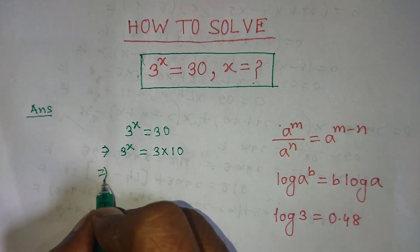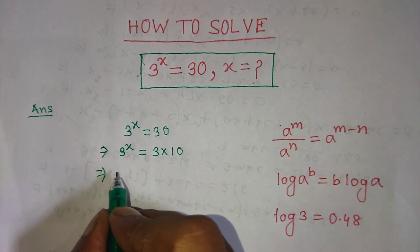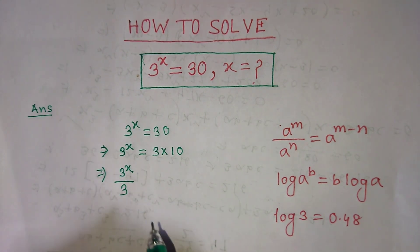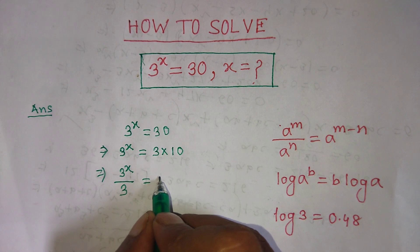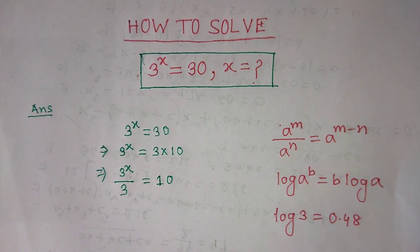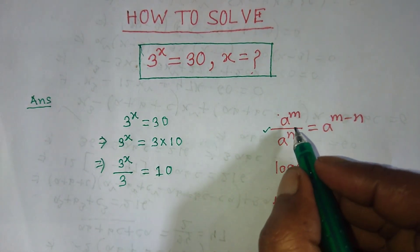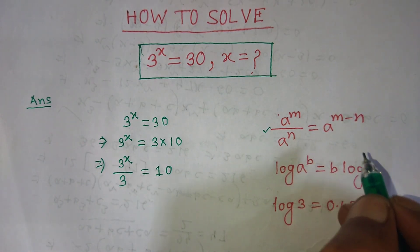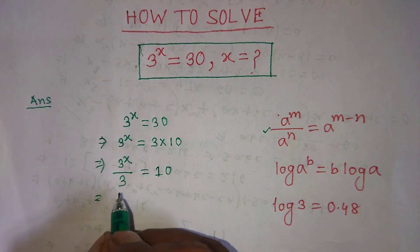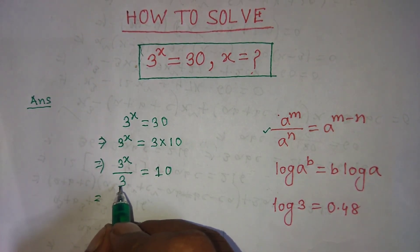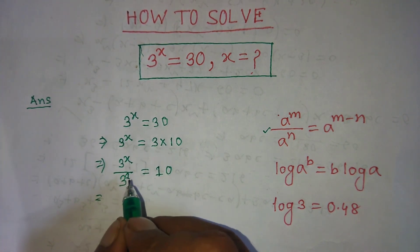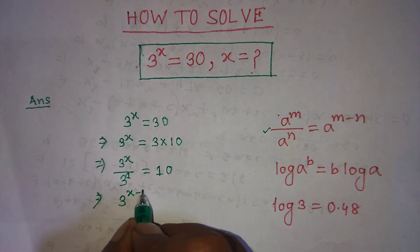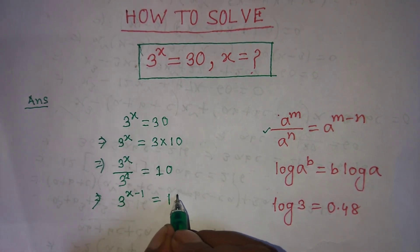After that, we have to transpose the digit 3 from the right side to the left side. So on the left hand side, we write 3 to the power x over 3, which is equal to 10 on the right hand side. We apply the formula: a to the power m over a to the power n equals a to the power m minus n. Since the power of 3 in the denominator is 1, we write 3 to the power x minus 1 equals 10.